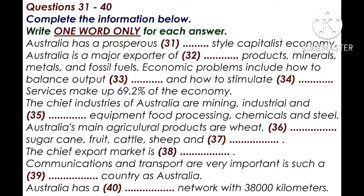You'll probably find it hard to believe how many airports we've got — 10? 20? 50? No. The total is 443. This includes many short runways on farms and in the outback. There are only 9 airports with runways of more than 3,000 metres.